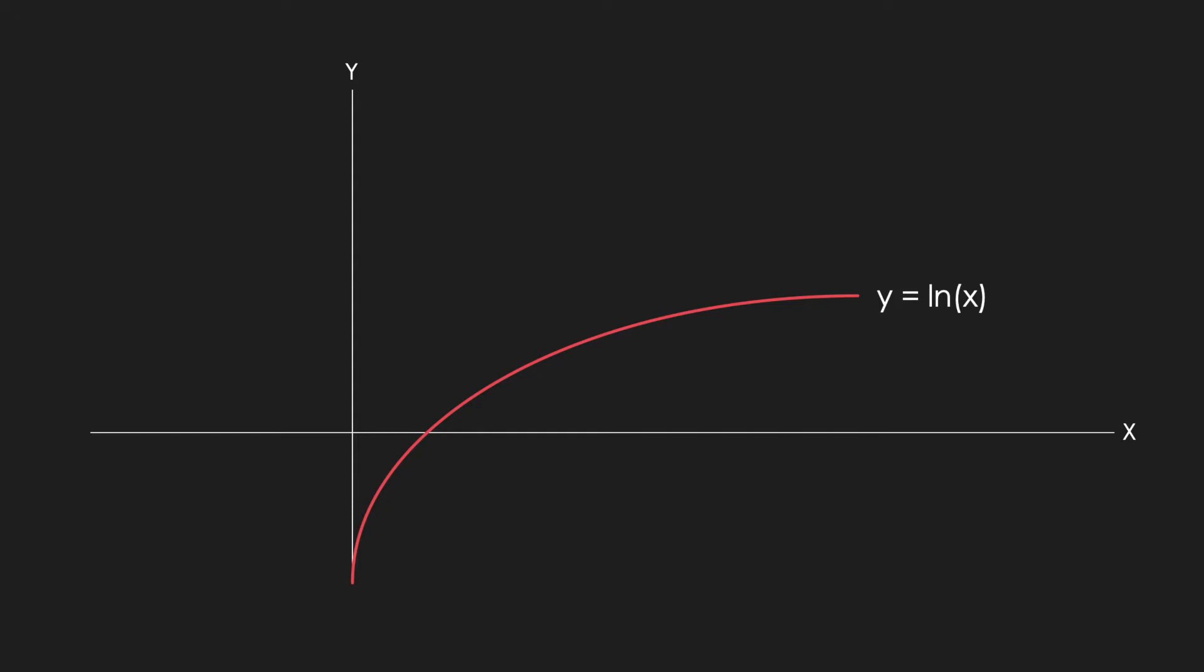Maybe it's just me, but I like to think of logs in terms of their exponential form, at least when graphing them, because it makes visualizing them in a Cartesian plane much easier. Here, the statement y equals natural log of x reads as e to the power of y equals x. So I'll go ahead and write that down.